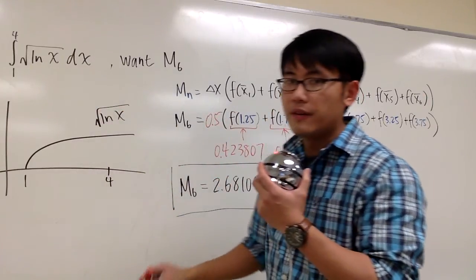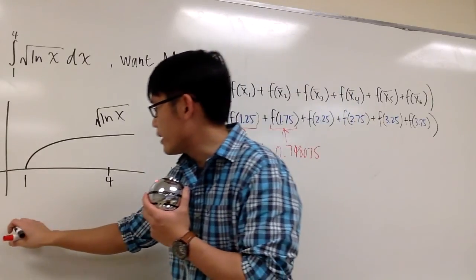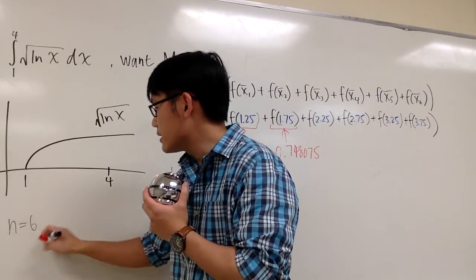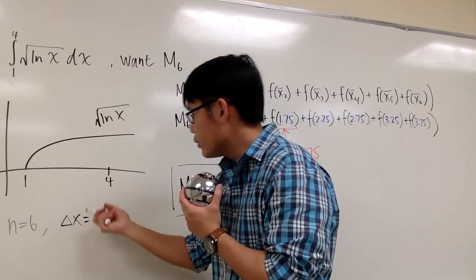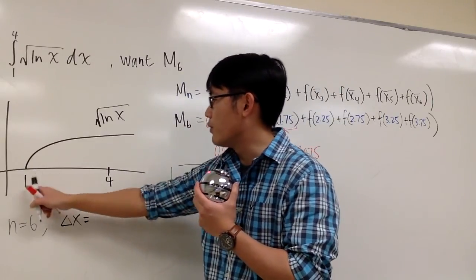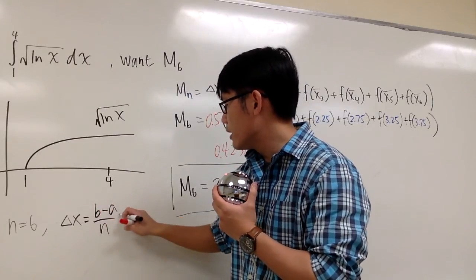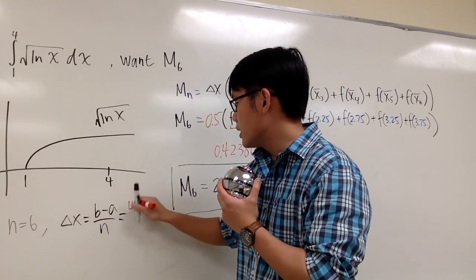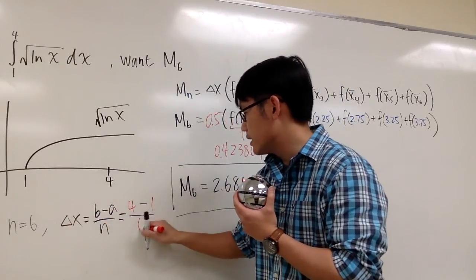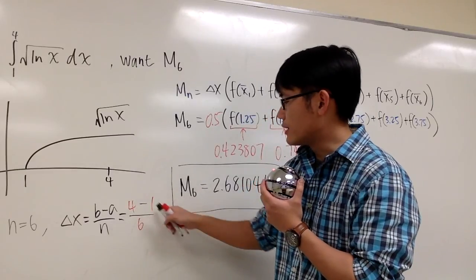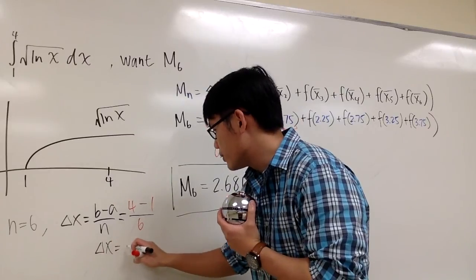The first thing we have to do is figure out how wide each rectangle is. We have 6 rectangles, so n equals 6. The width, delta x, uses the formula b minus a over n, where b equals 4, a equals 1, divided by n which is 6. So 4 minus 1 is 3, divided by 6, gives us 0.5. In other words, delta x equals 0.5.